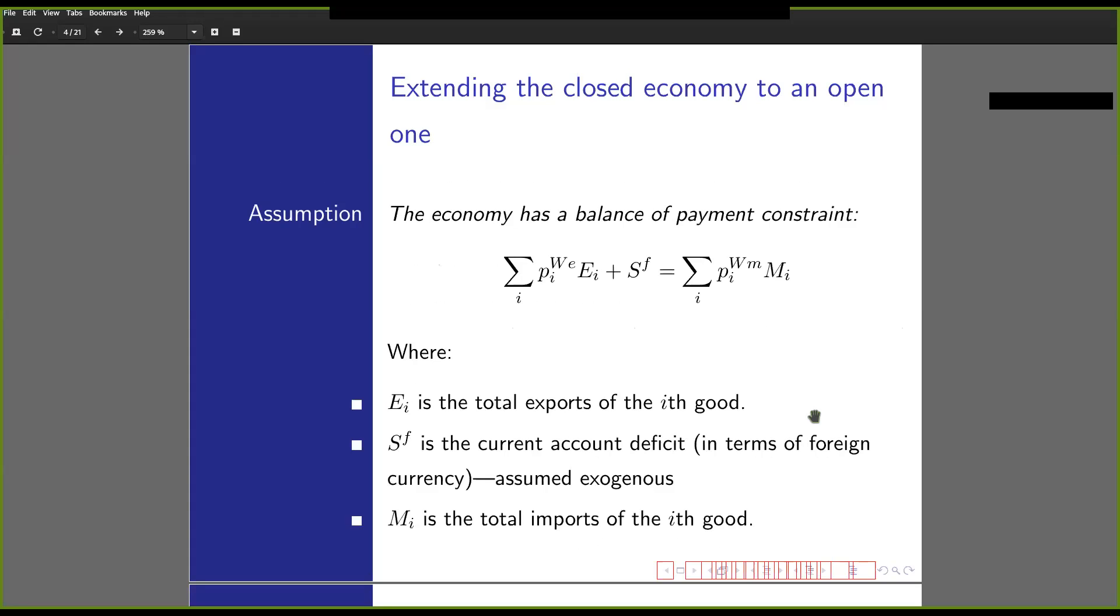Our next assumption is that the economy has a constraint regarding its balance of payments. In this case, the total foreign prices of exports plus the current account deficit in terms of foreign currency is equal to the total local prices of imports. The current account deficit is exogenous.